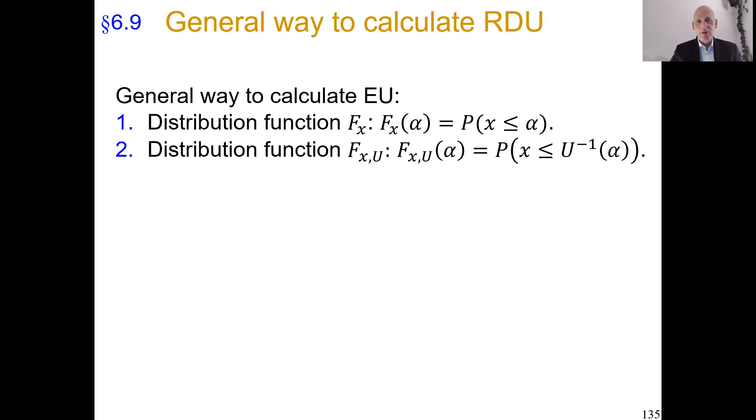Now, it is convenient for us to do the distribution function in utility units, so we assign to each real number alpha the probability that x, the random variable x, yields a utility level less than or equal to alpha.